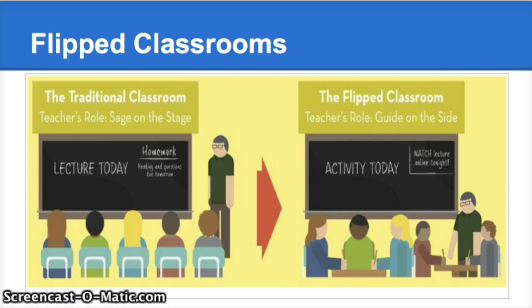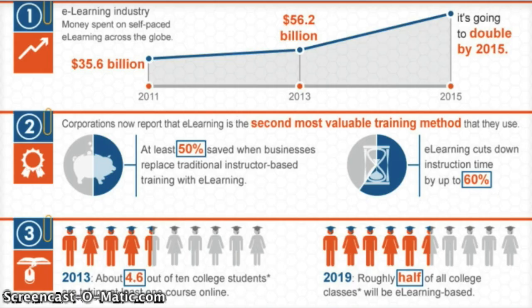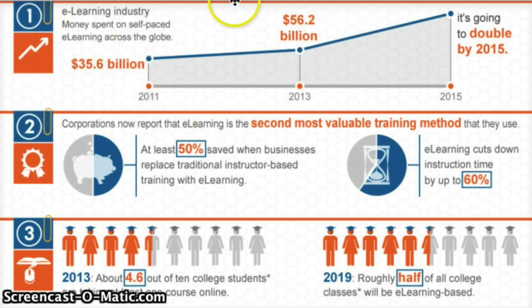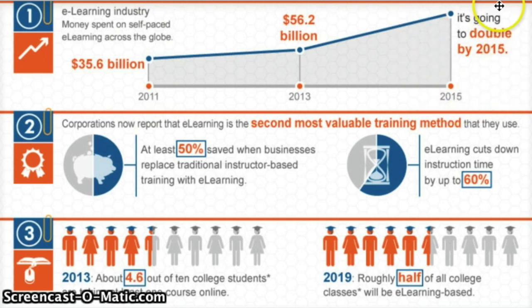Research shows no signs of slowing. In the article Top 10 E-Learning Statistics for 2014, Christopher Pappas outlines how the e-learning industry is brighter than ever. Global spending towards e-learning increased by $20.6 billion from 2011 to 2013, and is expected to be over $100 billion by next year.